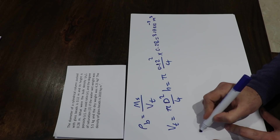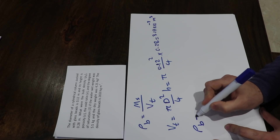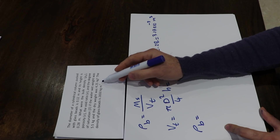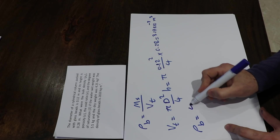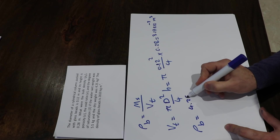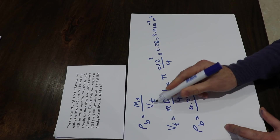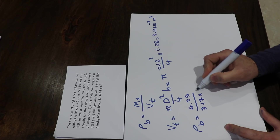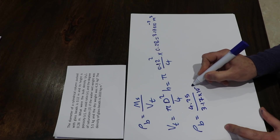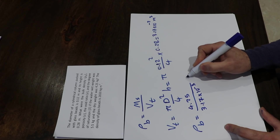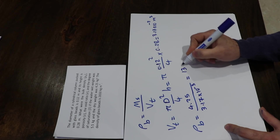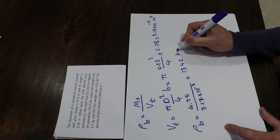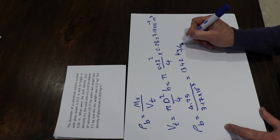Therefore, rho_b equals the mass of the dry solid, 4.25 kg, divided by the total volume, 3.17 × 10⁻³ cubic meters, which equals 1342 kg per cubic meter.